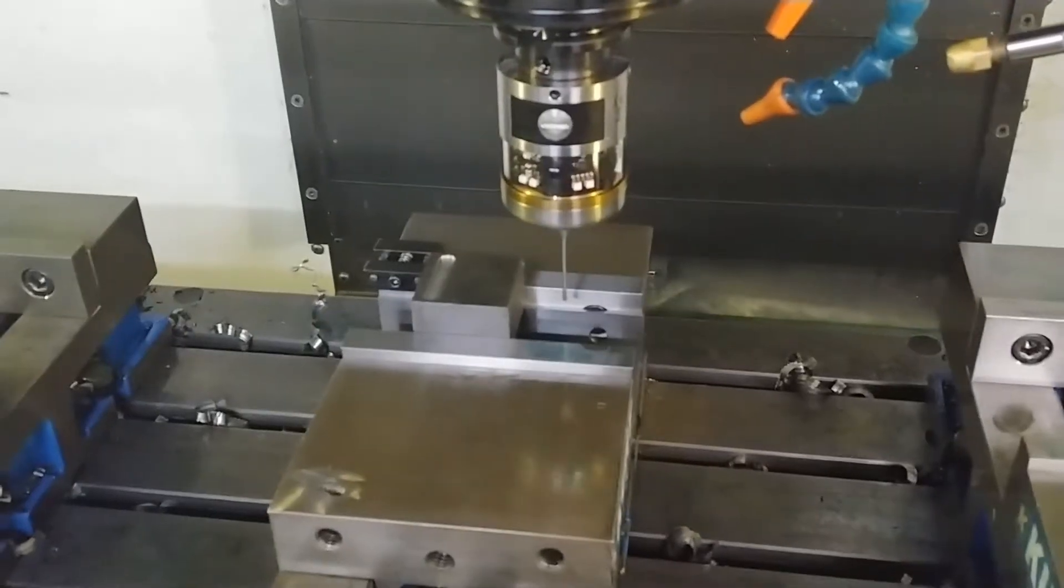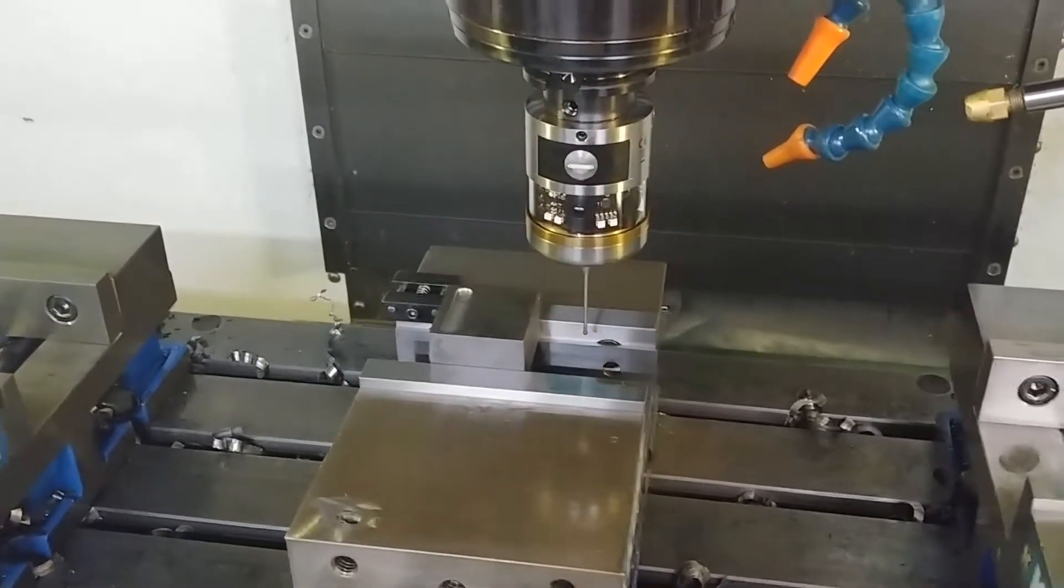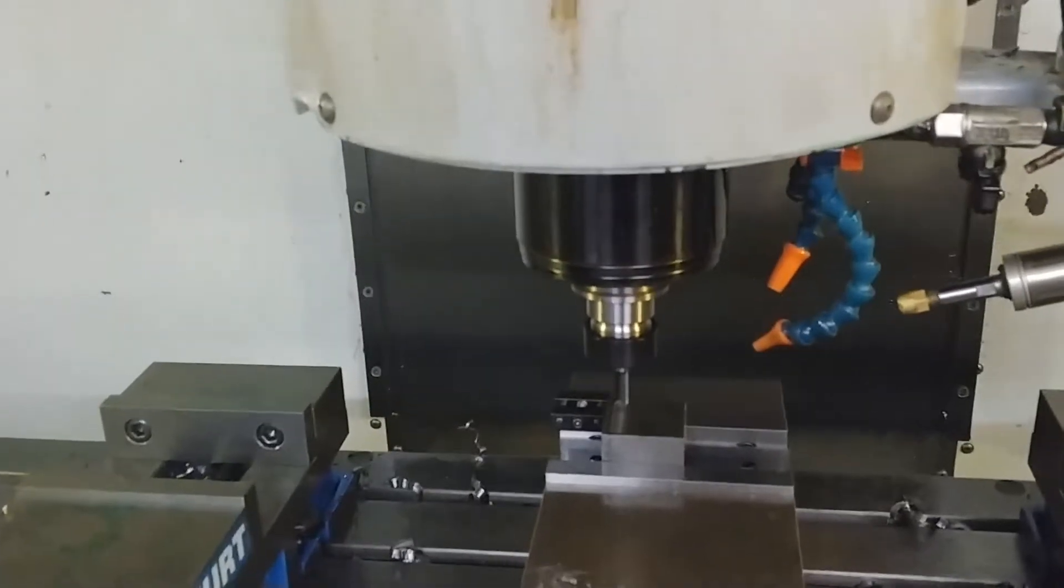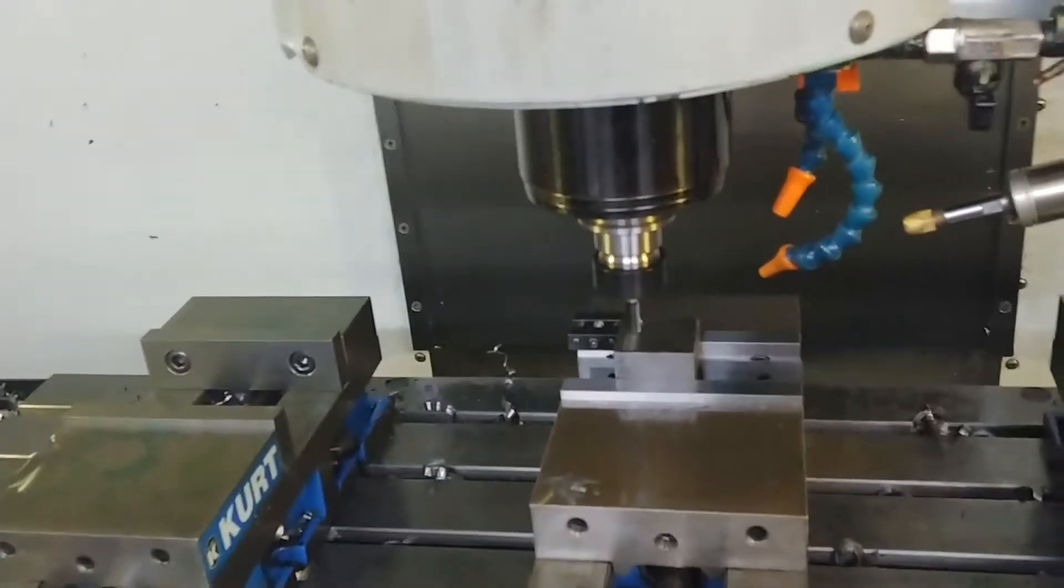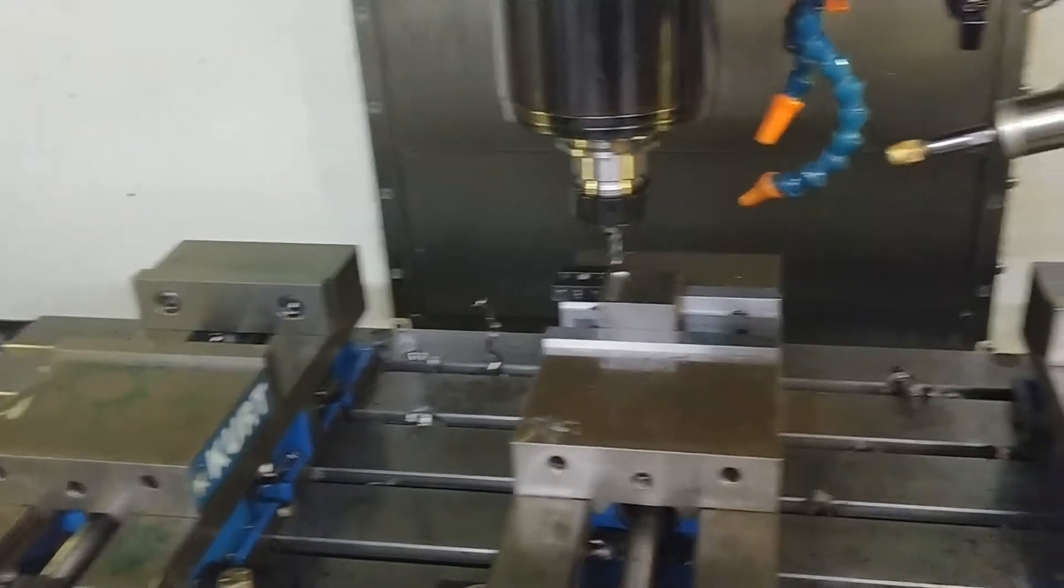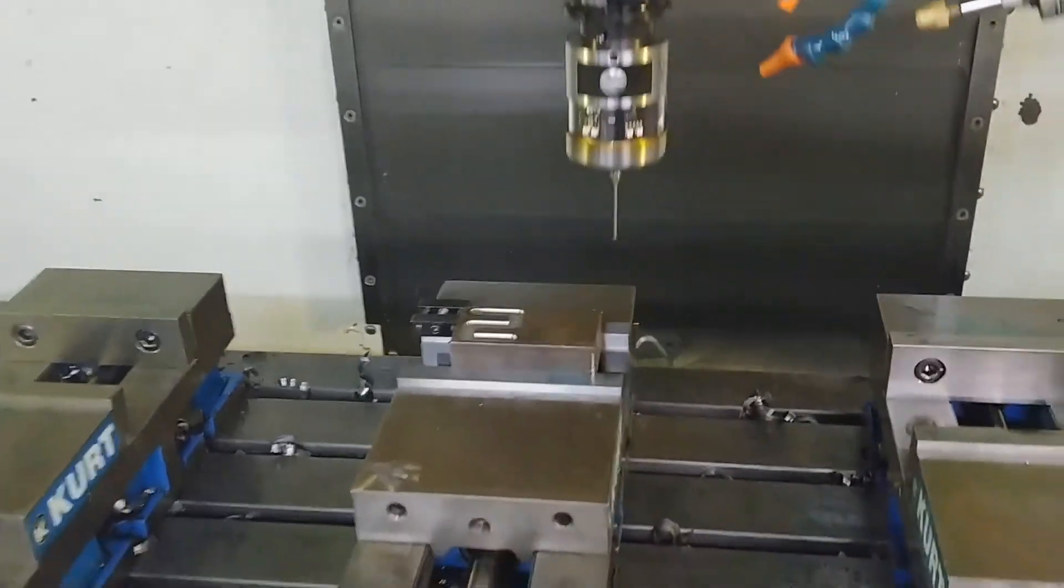If you would like to further decrease downtime and scrap in your shop, you could also write a macro which will measure the stock and then run the appropriate program for the stock of that size. In this example, if the machine determines the shorter stock has been loaded, it will run program 1, while if the longer stock has been loaded, it will run program 2.